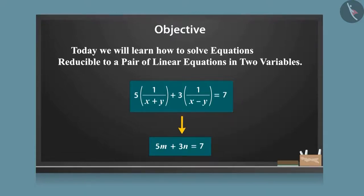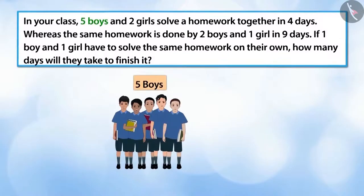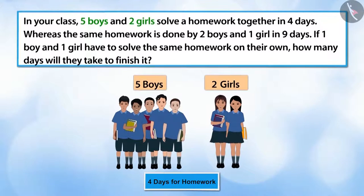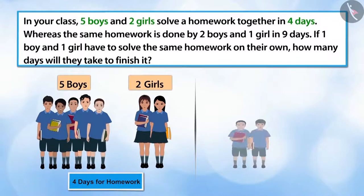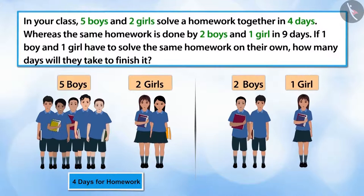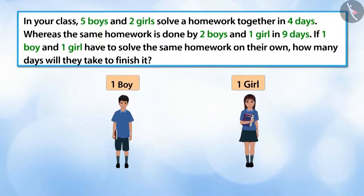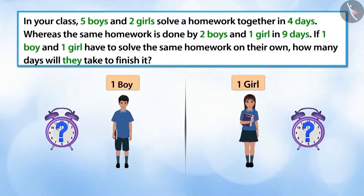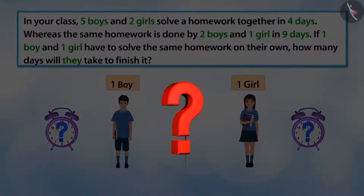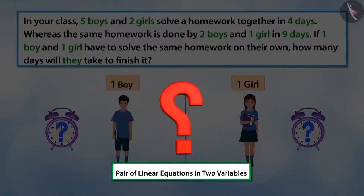In your class, five boys and two girls do their homework together in four days, whereas the same homework is done by two boys and one girl in nine days. If one boy and one girl together have to do the homework on their own, how many days will they take to finish it? Can you write a pair of linear equations in two variables to represent this situation? Let's make a pair of equations.